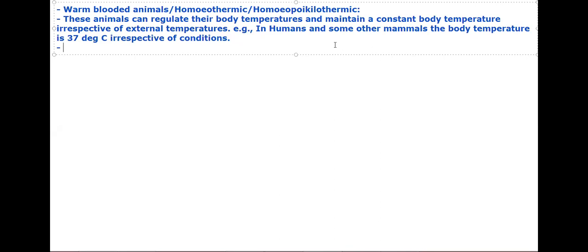In humans and some other mammals, the body temperature is 37 degrees centigrade irrespective of external conditions. The definition specifies external temperature — not internal. If you are ill and body temperature rises, it is because regulation has failed, which is why it is a disease condition, not a normal condition.